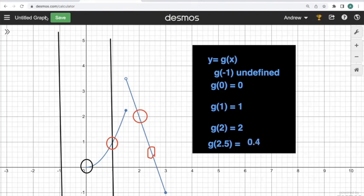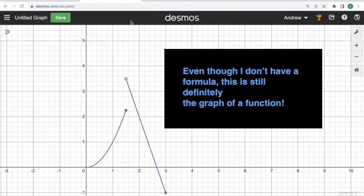The important thing is, even though I don't know a formula for this, and even though I don't have a nice continuous function, because when I try to trace this, I do have to lift my pencil to make this transition, it's still a function. This is definitely the graph of a function. We don't have to have a formula for the function. I can just read it directly from the graph.